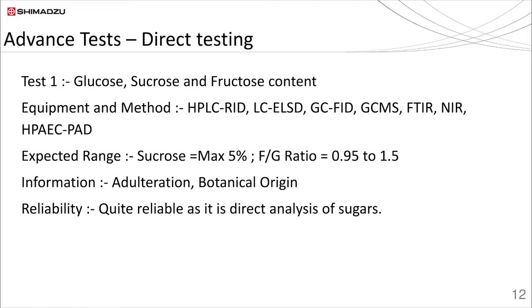There are also some published methods available using FTIR in both MIR and NIR regions for sugar analysis. FSSAI has set limits for sucrose to a maximum of 5%, along with a fructose-to-glucose ratio between 0.95 to 1.5. Changes in these values can flag the possibility of adulteration.